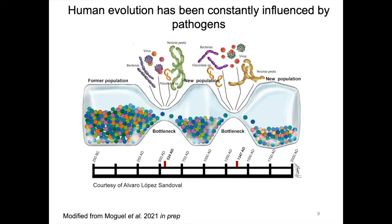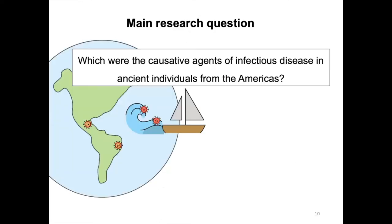Pathogens have been part of our evolution and have had long-term consequences on our genome. Here I show an image depicting some of the deadliest pathogens in human history, like Yersinia pestis, which had a great impact on human populations, causing bottlenecks — a reduction of population size and therefore genetic variation. This led us to pose the following research question: which were the causative agents of infectious diseases in ancient individuals from the Americas?